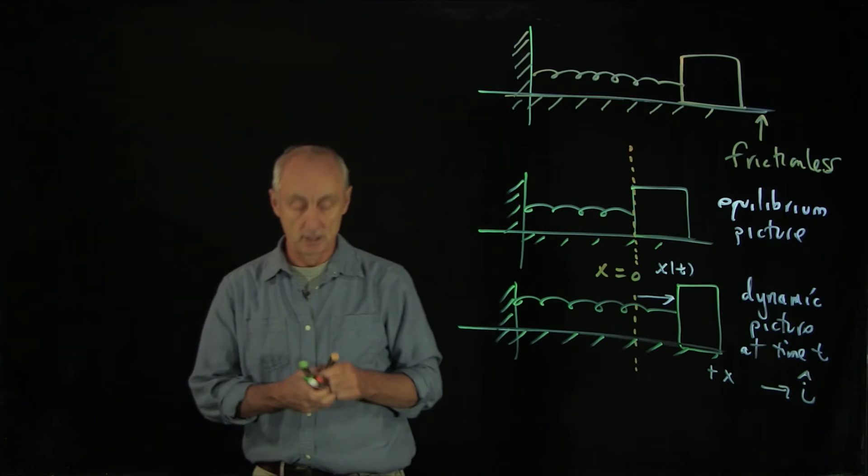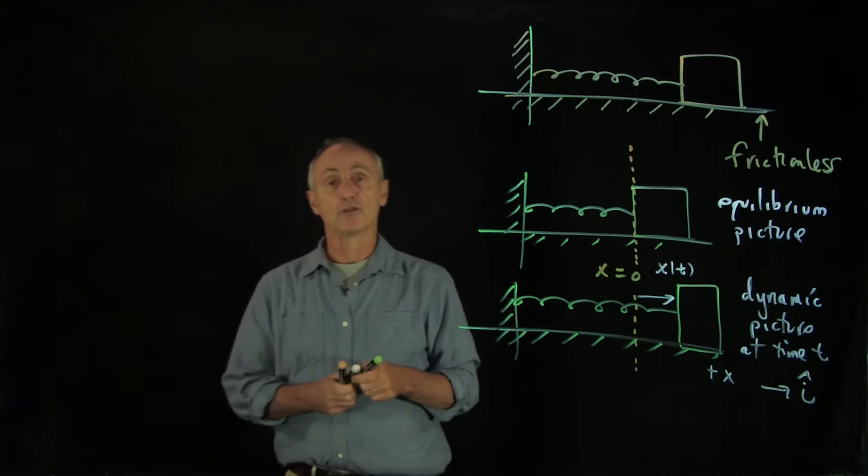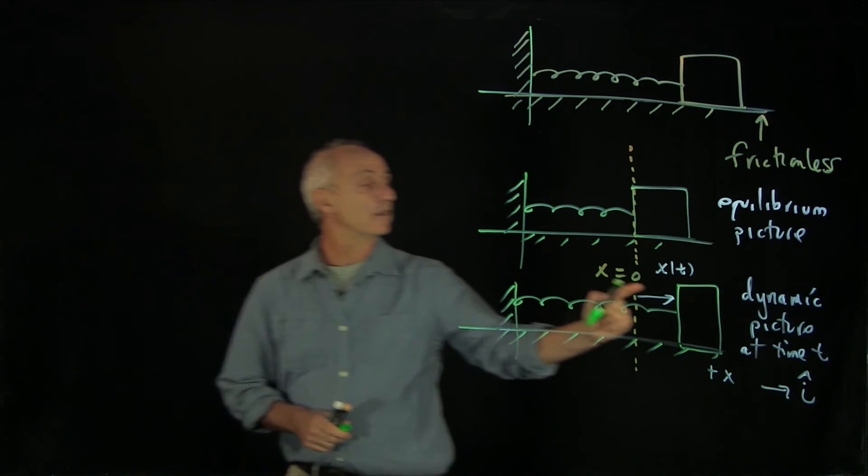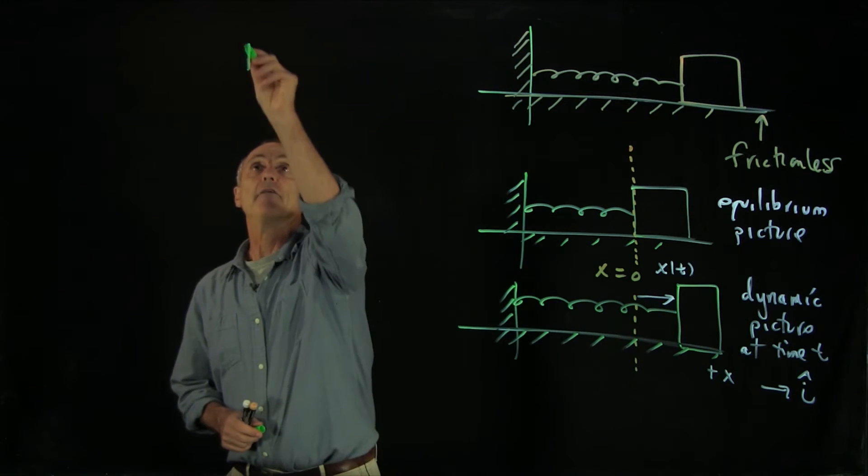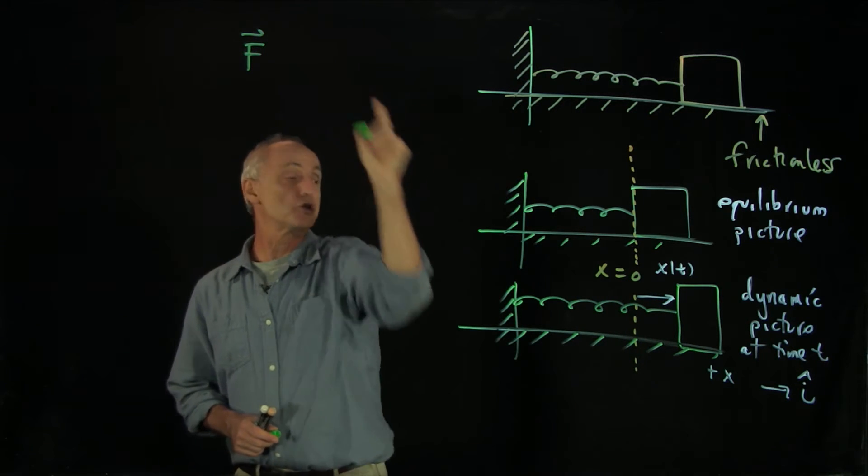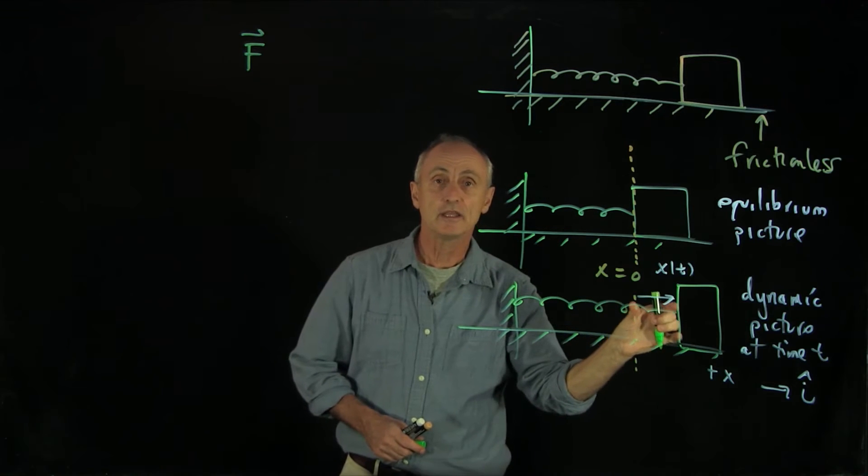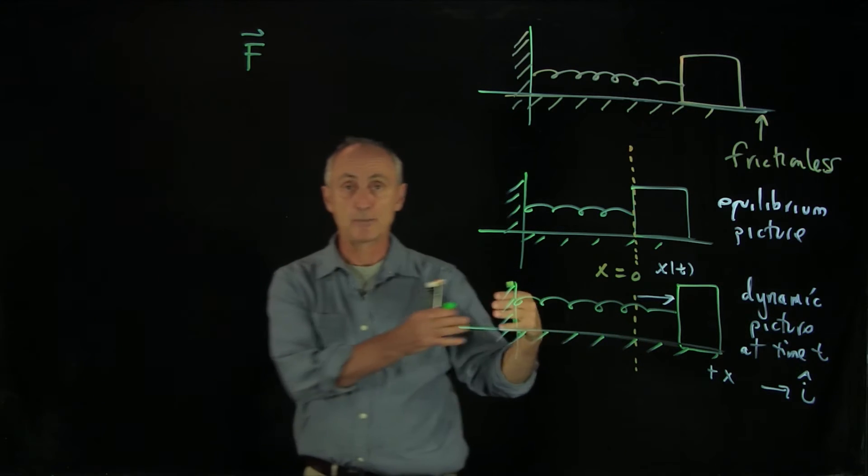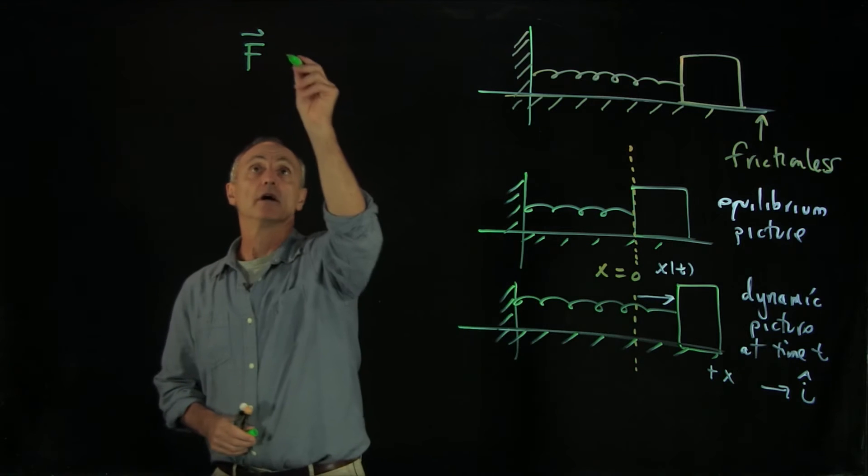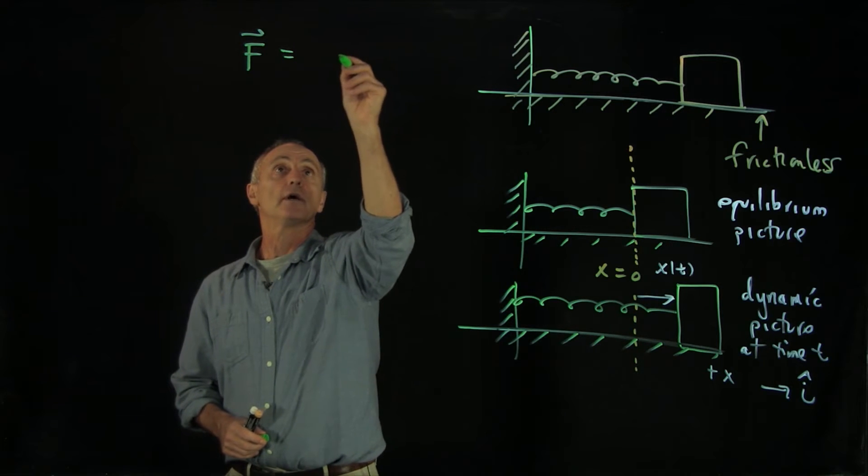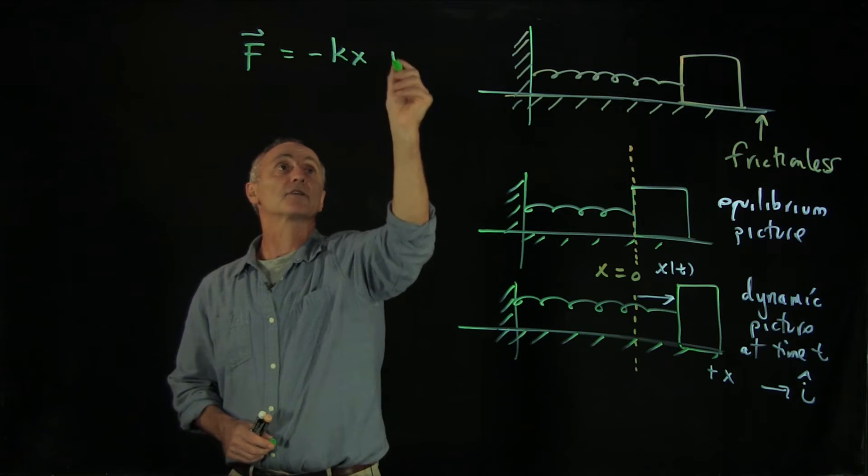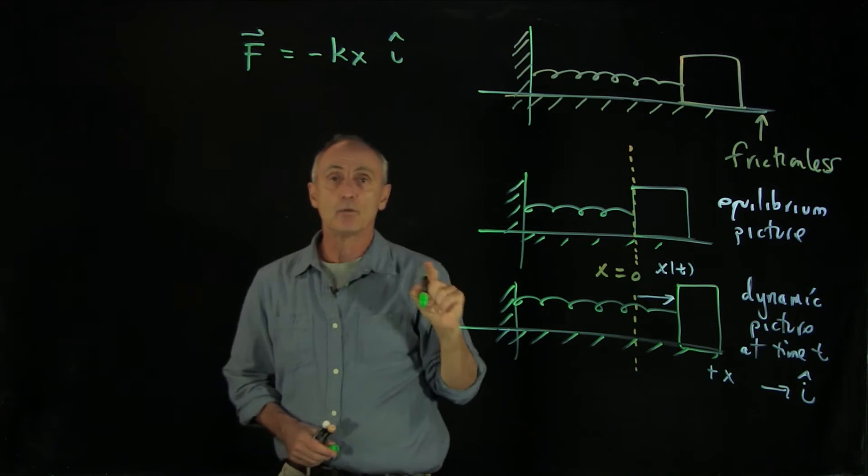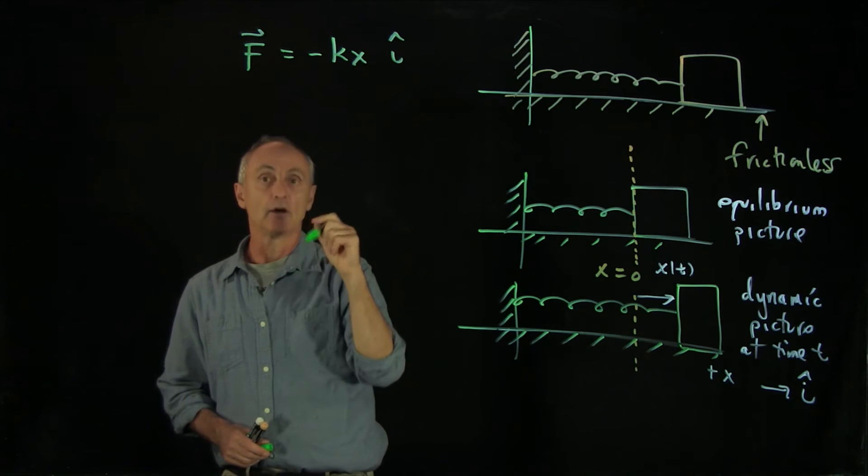Now Hooke's law is the statement that the force on the object, F, is proportional to how much the object has displaced, which represents either the stretching or the compressing of the spring. So it's equal to minus kx i hat. Now what does this minus sign mean?